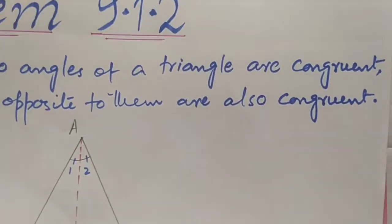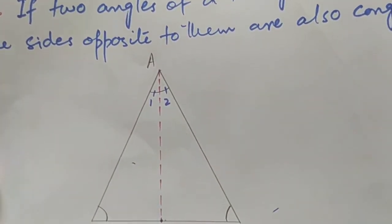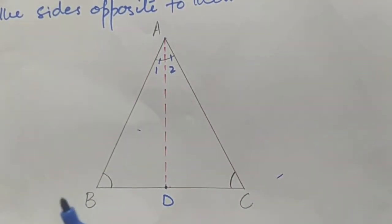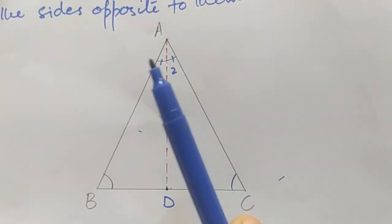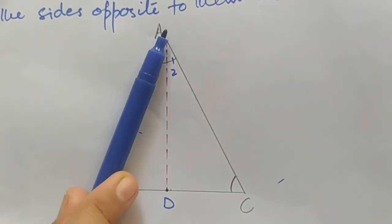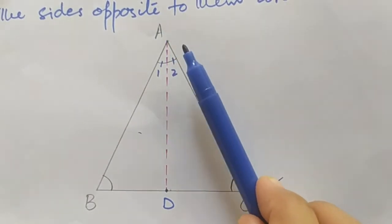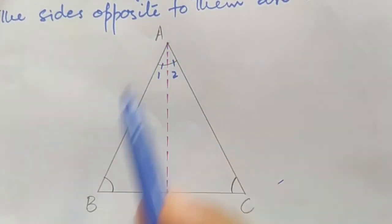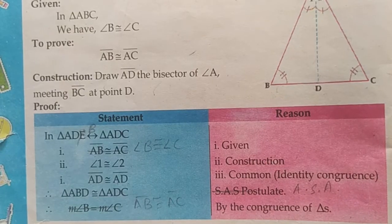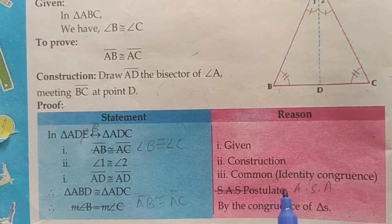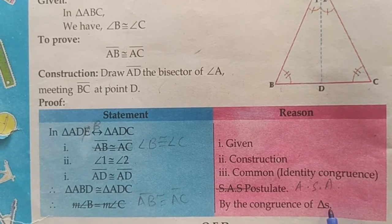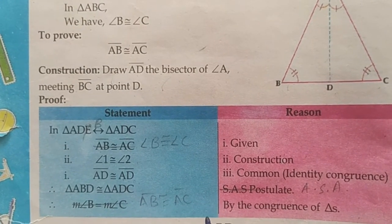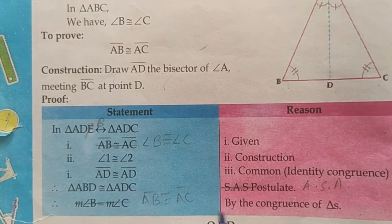From the congruency of the two triangles, we can conclude that AB is congruent to AC, which is what we had to prove. So by the congruency of the triangles, AB is congruent to AC, and it has been proved. In the next video, I will prove the third theorem, which is Theorem 9.1.3.